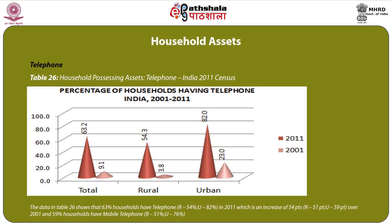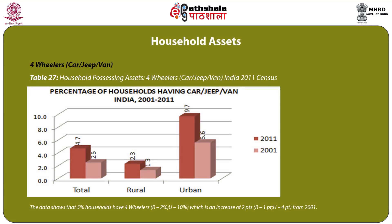Table 26 covers household possession of telephone in 2011. Overall, 63 percent of households have telephone, with an increase of 51 points in rural and 59 points in urban areas over 2001. About 59 percent of households have mobile telephones (rural 51 percent, urban 76 percent). Table 27 covers households possessing 4-wheelers (car, jeep or van). The data shows that 5 percent of households have 4-wheelers (rural 2 percent, urban 10 percent), an increase of 2 points from 2001 (rural 1 point, urban 4 points).